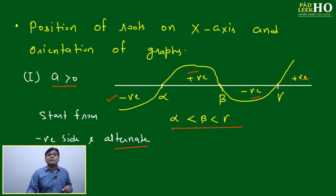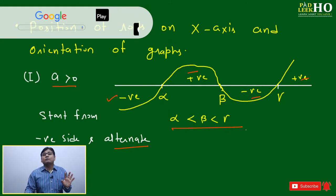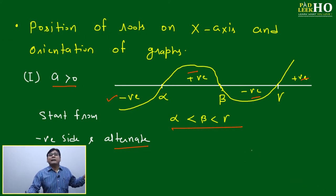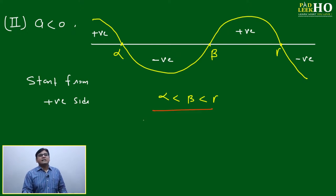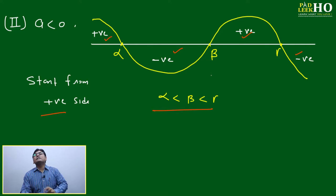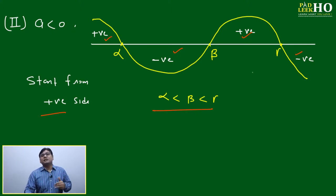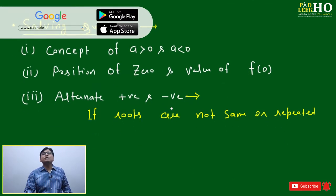When placing roots on the number line in increasing order, don't confuse negative numbers with position — if one root is -5 and another is -1, then -5 is less than -1. If a < 0, and roots are placed with alpha < beta < gamma, then you start from the positive side: positive, negative, positive, negative. So there are only four possibilities: positive-negative-positive-negative or negative-positive-negative-positive, because the graph must cross the x-axis at three points.